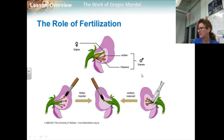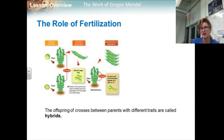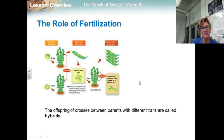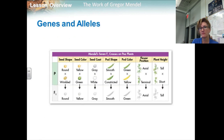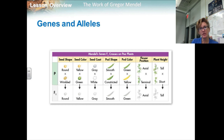Mendel studied seven different traits of pea plants, each of which had two contrasting characteristics, such as green seed color or yellow seed color. Mendel crossed plants with each of the seven contrasting characteristics and then studied their offspring. The offspring of crosses between parents with different traits are called hybrids. When doing genetic crosses, we call the original pair of plants the P, or parental generation. Their offspring are called the F1, or first filial generation. For each trait studied, all the offspring had the characteristics of only one of their parents, as shown in the table here.